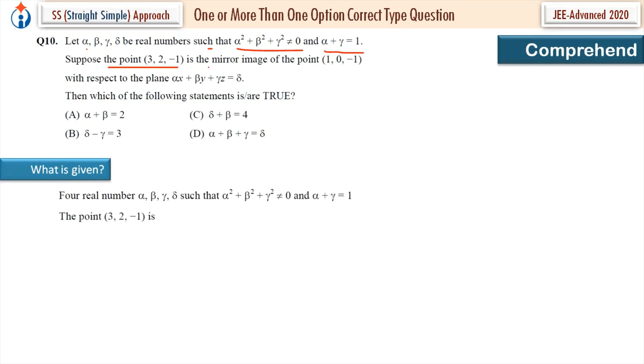Suppose the point is the mirror image of the point with respect to the plane. So this point is the mirror image of this point with respect to this plane. Then what is asked - the true statement. And this equation of plane is in four unknowns: α, β, γ, δ.